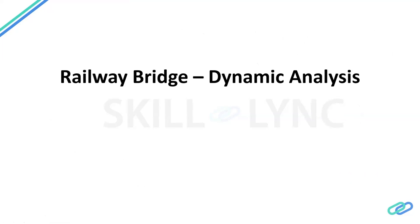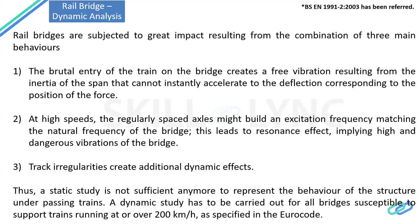Now let us see how a dynamic factor has been computed for railway bridges. For railway bridges, it is not straightforward. We will perform a dynamic analysis in order to get both the impact factor and the deck acceleration. The deck acceleration is also found based on the dynamic analysis. You may think: for a highway bridge, it is straightforward — we just refer to some graph, get the impact factor, and consider that in our analysis and design. But in case of a railway bridge, we need to perform an additional dynamic analysis to get the dynamic factor.